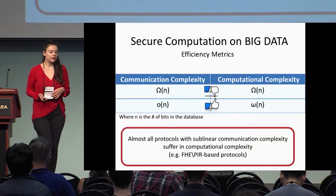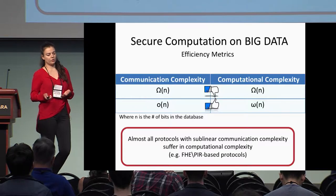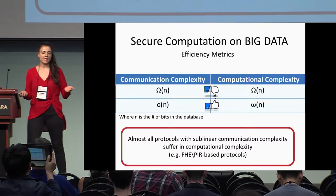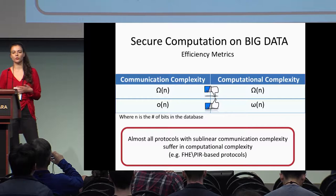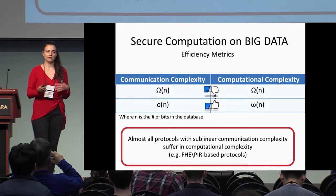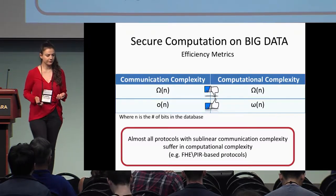Ideally we would like to have sublinear computational complexity as well. And if we're stuck with linear computational complexity, it had better use symmetric key operations and not heavy public key operations.